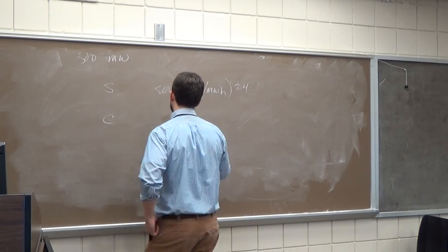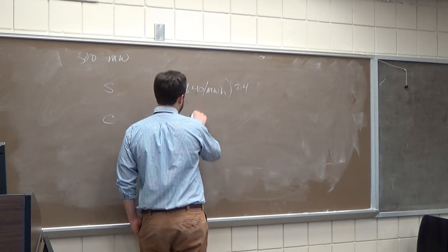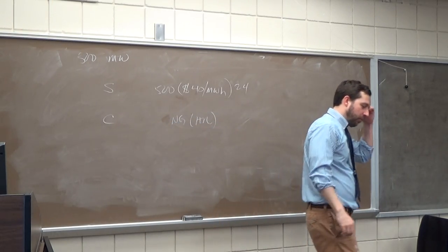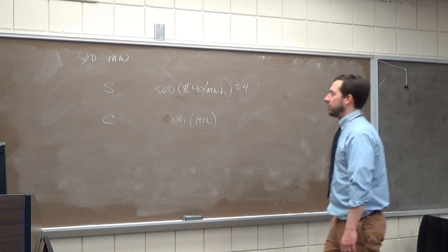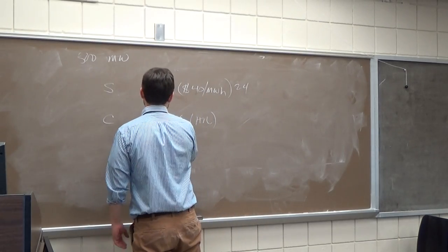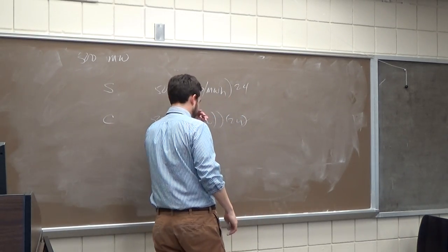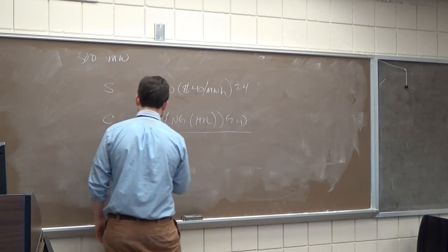So it's going to be our cost of natural gas times our heat rate, which is, the heat rate is what's going to translate the price per natural gas into the price of electricity, times our 500 times our 24. So 500 times 24.